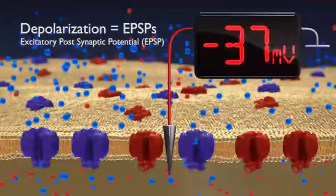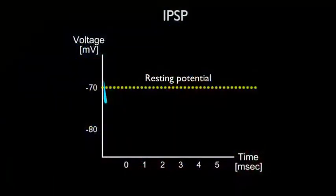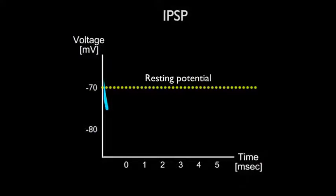First, the neuron can become inhibited, or even less likely to send or receive a message than it was at rest. In other words, the inside becomes even more negative than it was at rest.